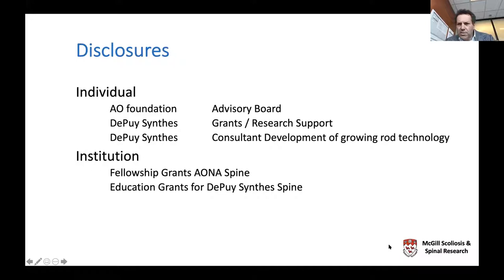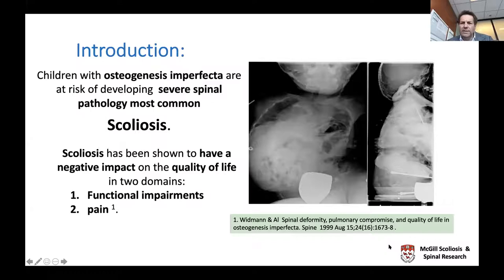These are my disclosures. I'm involved in quite a bit of research and am a consultant developing an implant not related to OI, and I have fellowship grants as well as funding. As a broad concept, children with osteogenesis imperfecta are at high risk of developing severe spinal pathologies, and the most common one is scoliosis.